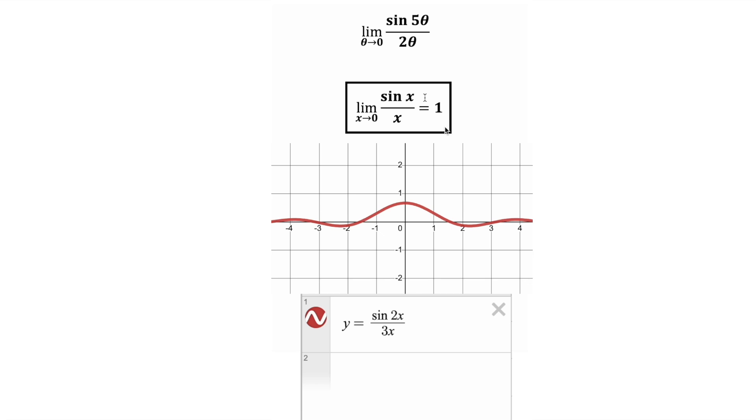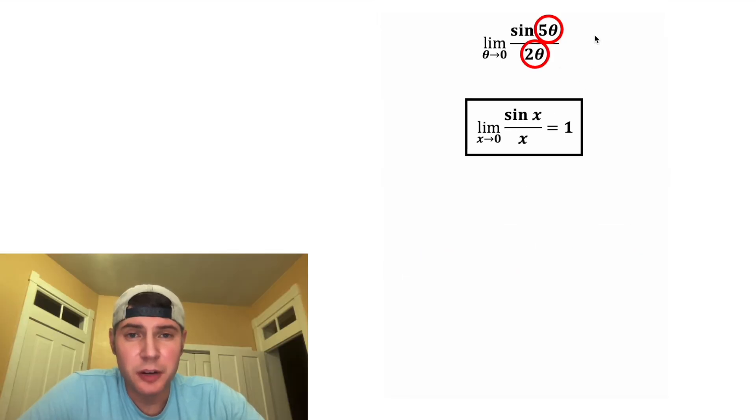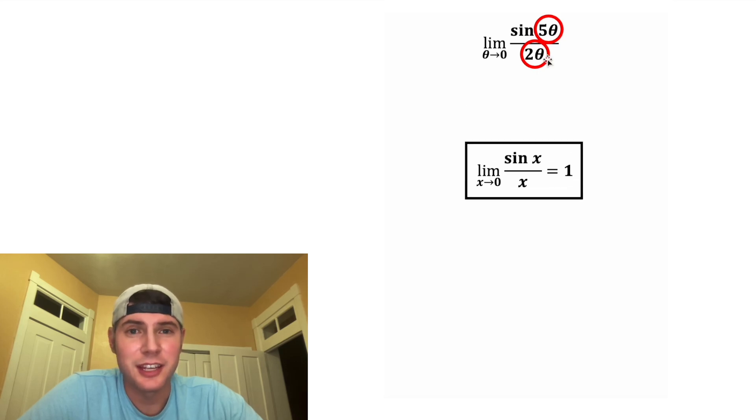you can see they will all hit at 1 when x equals 0. But if it is anything different, like sine 2x over 3x, then it doesn't approach 1. It only works if these two terms are the same. So we can't use this right away because this 5 theta is not the same thing as the 2 theta. So our goal is to get this to match this.